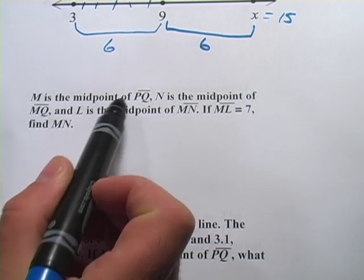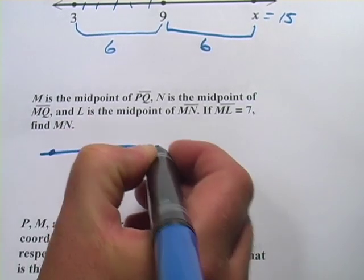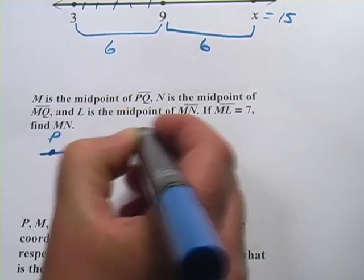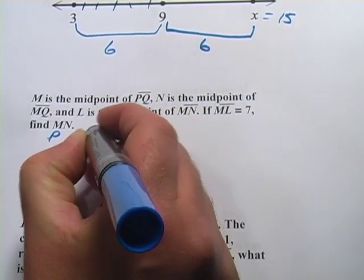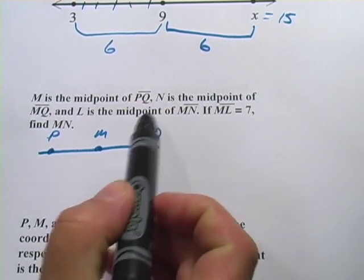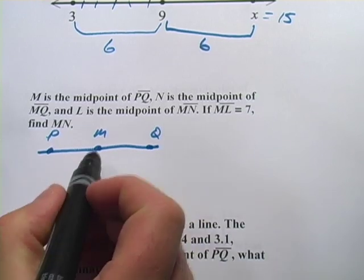First of all, it says M is the midpoint of PQ. So let's make PQ here, PQ and there's M in the middle.